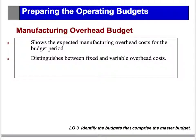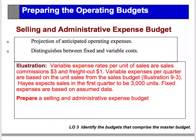Next is the manufacturing overhead budget. We're going to estimate what we think the costs will be in manufacturing overhead each quarter of next year. We break those costs into those that are fixed and those that are variable. The fixed are not going to change from year to year very much, but the variable, of course, has a lot to do with production. So if we're talking about the selling and admin expense budget, we look at the fixed cost and the variable cost. The variable expense rate per unit of sales is $3, and freight out is $1.